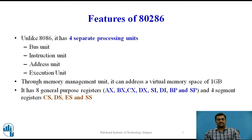Unlike 8086 this microprocessor has got 4 separate processing units. The 8086 has 2 separate processing units namely bus interface unit and execution unit, whereas this microprocessor has got 4 separate processing units which act parallely. The first unit is bus unit, the second unit is instruction unit, the third unit is address unit and the fourth unit is execution unit.